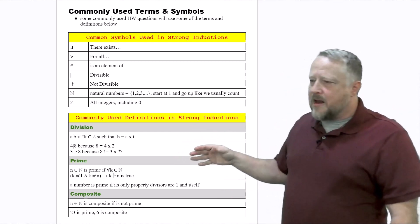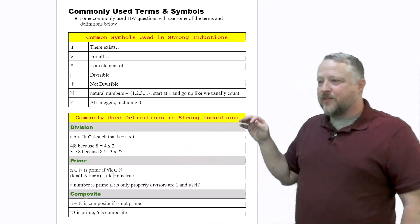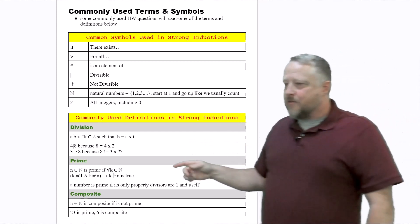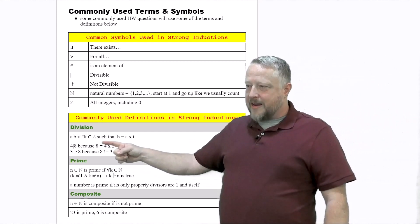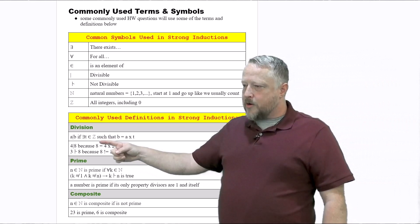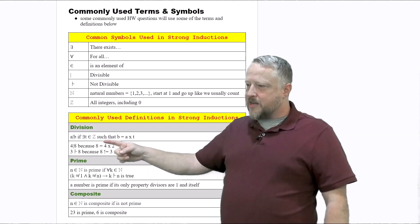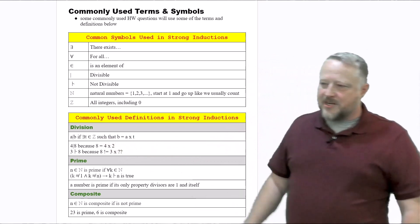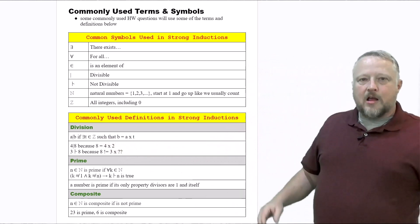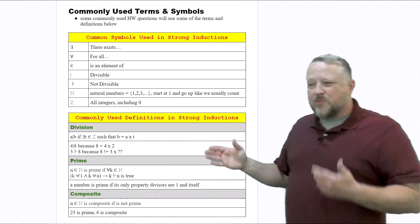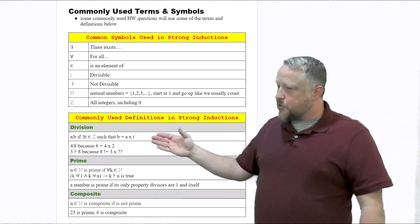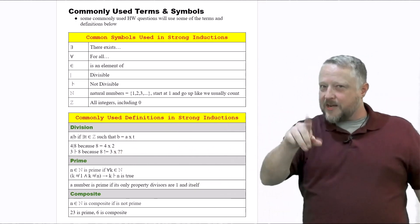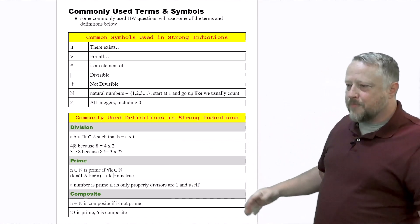If we have something where a is divisible by b, there exists some t — where z means all integers including zero — such that b equals a times t. There's going to be some t that satisfies this, and notice there's no remainder or anything else like that.